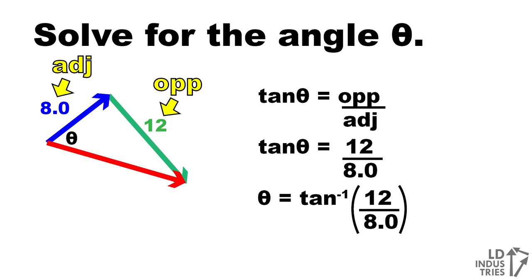And we're going to type that into our calculator by pressing 2nd, and then the tan button, then 12 over 8. This will give you 56 degrees.